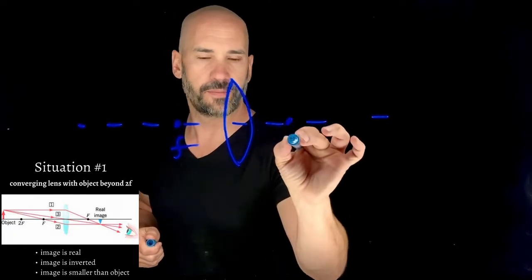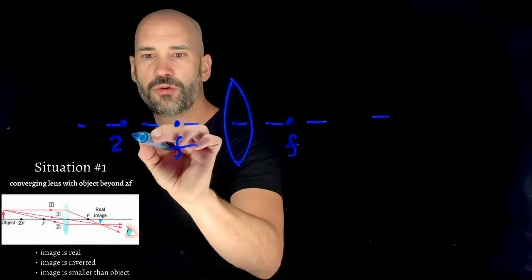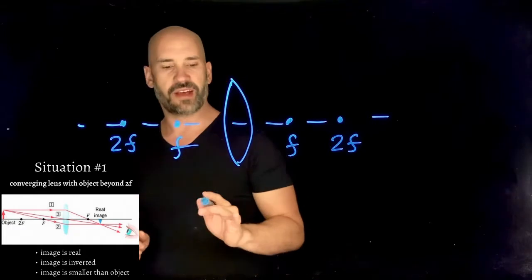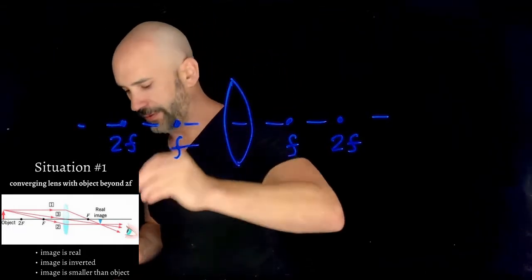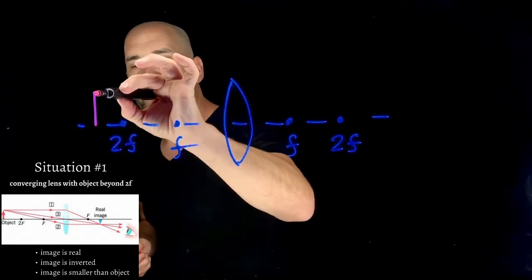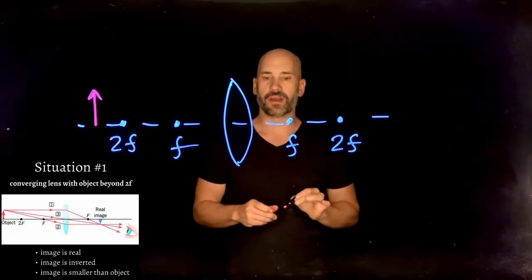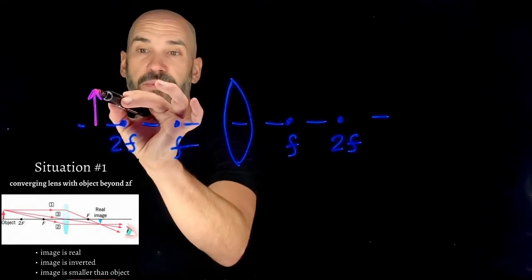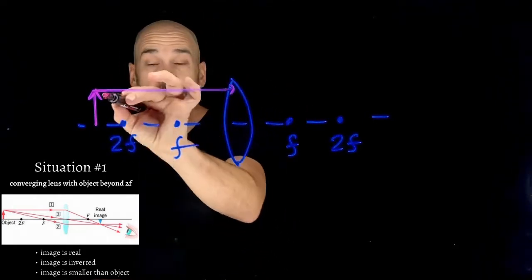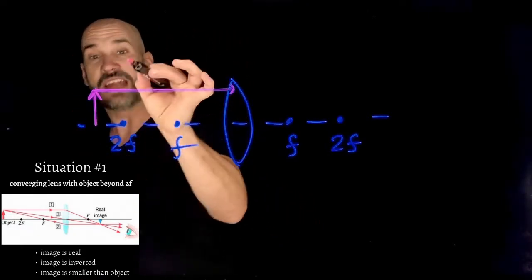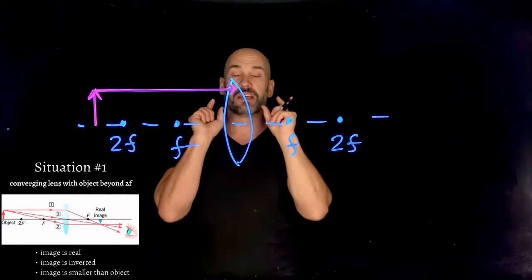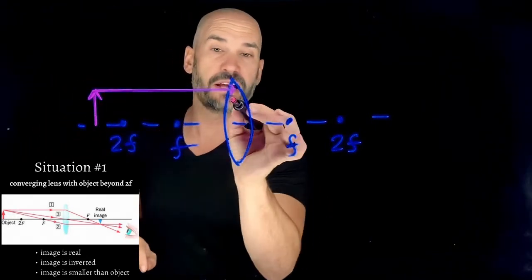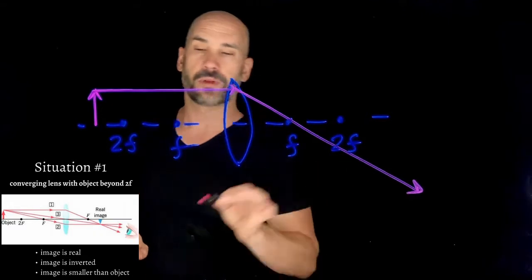We have the focal length on either side and two times the focal length on either side. Right now we're going to ask: what is the image formed if you have an object that is outside of twice the focal length? We do our special rays — one ray leaves parallel and goes through the focal length on the other side.